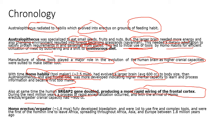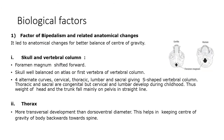Homo erectus shows fully developed bipedalism, the ability to use fire, and much more complex tools than Homo habilis. All these changes made it possible for Homo ergaster to leave Africa and spread throughout Africa, Asia, and Europe, beginning around 1.8 million years ago.